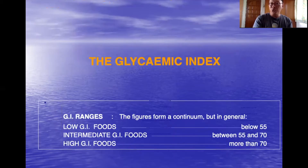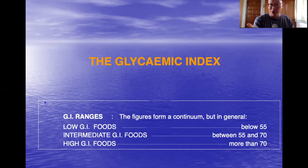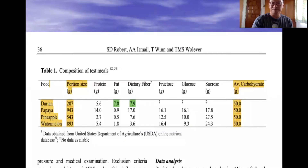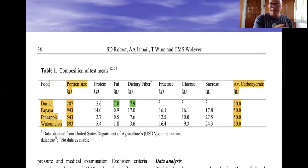A low GI food is a fruit or food that has a GI index of 55 and below. 55 to 70 is considered intermediate. High GI foods or fruit is anything with a GI index greater than 70. In this study, four tropical fruits were studied: durian, papaya, pineapple, and watermelon.